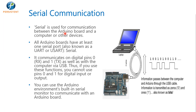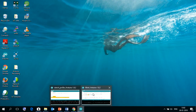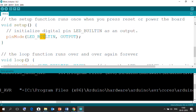Thus if you use serial communication functions, you cannot use pin numbers 0 and 1 for digital input or output — those should be kept free. You can use the Arduino environment's built-in Serial Monitor to communicate with an Arduino board. Back in the IDE, at the top-right corner there is a Serial Monitor. Before going to the Serial Monitor, make sure two things are set: the board — the IDE supports many boards so confirm it is set to Arduino Uno — and the port, typically COM5, COM6, or COM10.